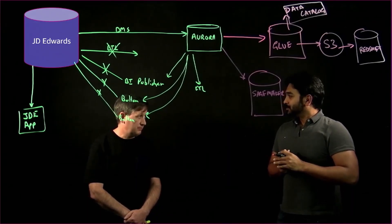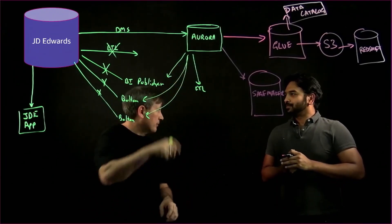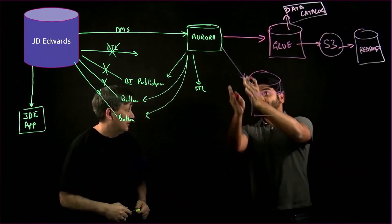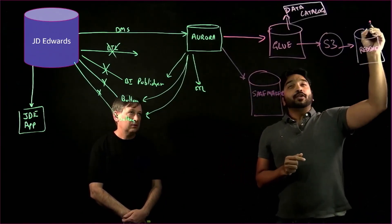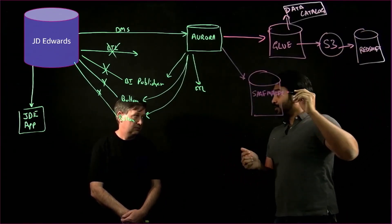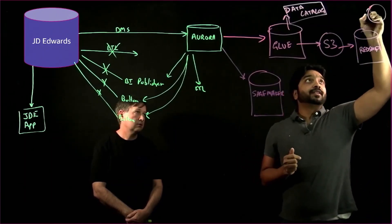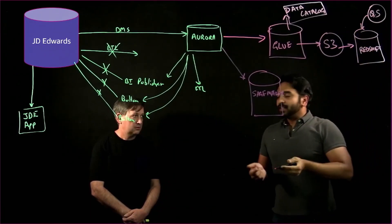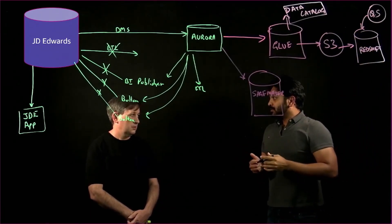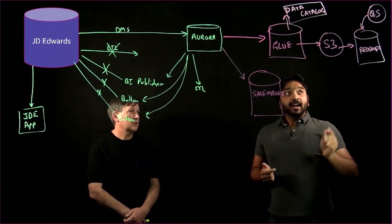So artificial intelligence machine learning. We can actually apply that to our JD Edwards data set. Yes. Through Aurora. Through Aurora. Wow. And to top it off, we also have some analytics and visualization services like Amazon QuickSight, which integrates with Redshift to read the data and help build some very interactive reporting and visualization. And that's not all.